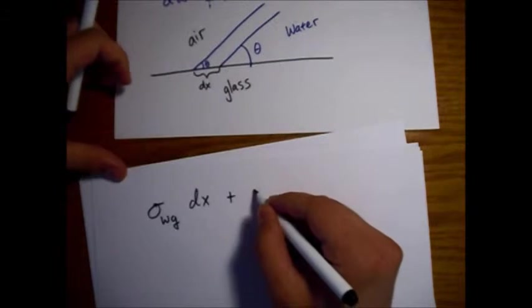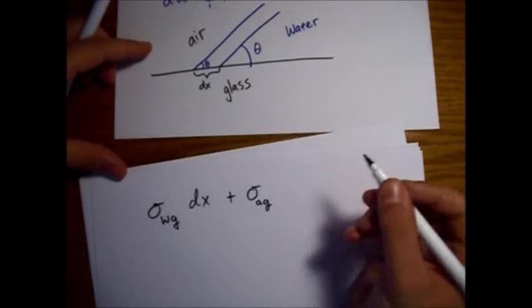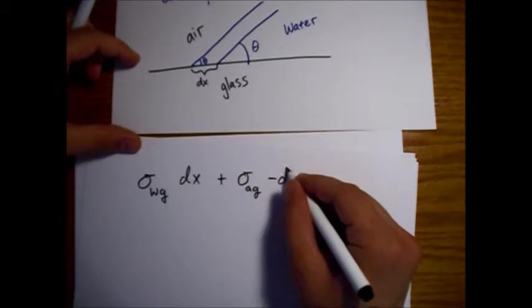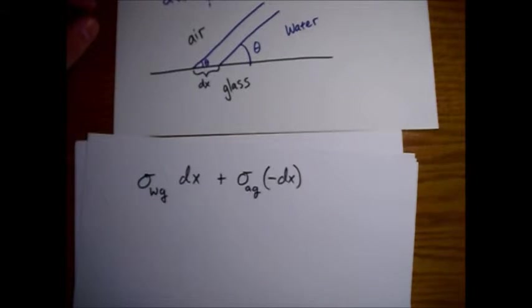Okay. So, we have sigma, which I'll call AG. And then because we're getting smaller, this is a minus dx.